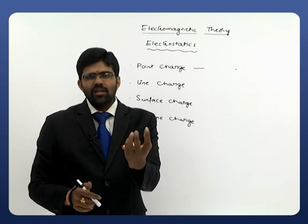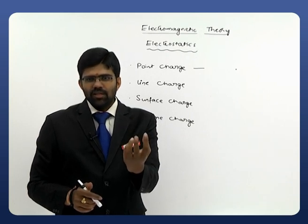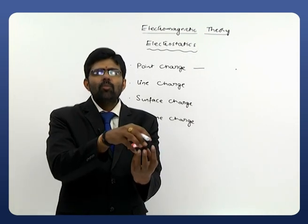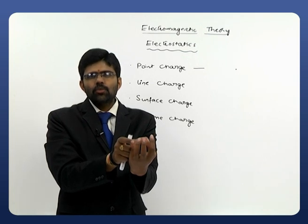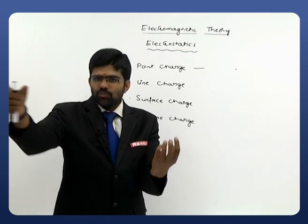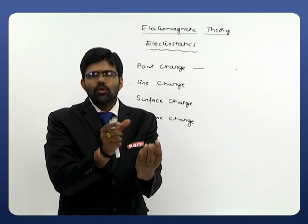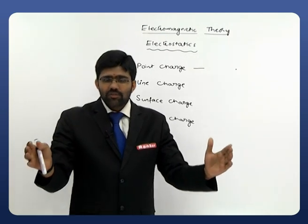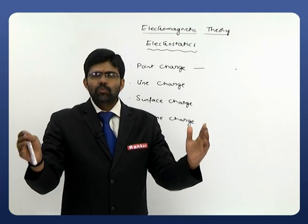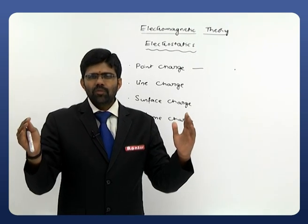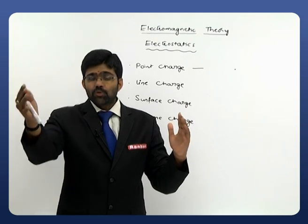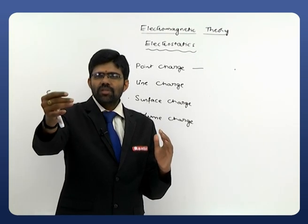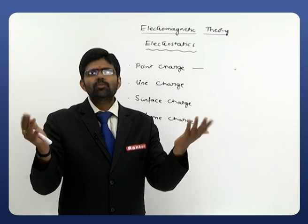Let us take an example. If you are considering a charge which is of cricket ball size, and you are observing this cricket ball of charge from 100 meter distance, then obviously it looks like a point charge. The dimension of the charge is about 6 to 7 centimeters. When compared with the 100-meter observation distance, this 6 to 7 centimeter is very small, that's why it can be treated as a point charge. In another example, if you observe a charge from 200 kilometer distance, when compared with the distance of observation, you can treat that charge as a point charge.